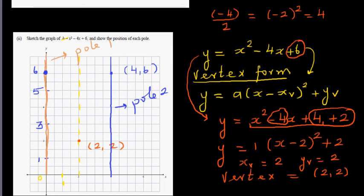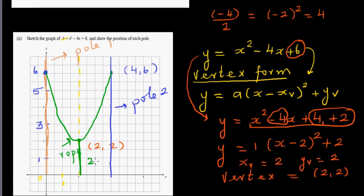If you want to sketch the graph, the curve goes between the two poles. The first pole is at x = 0, and the second pole is at x = 4, both at height 6 meters. The lowest point of the rope is the vertex at (2, 2), so the lowest point is 2 meters above the ground. The line of symmetry is x = 2.